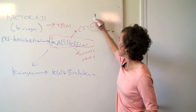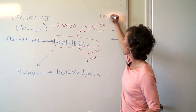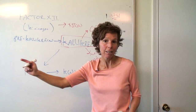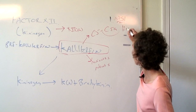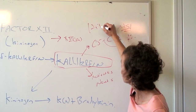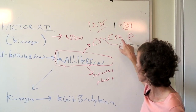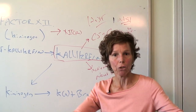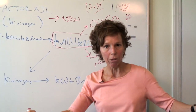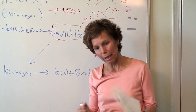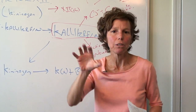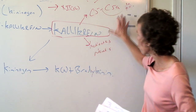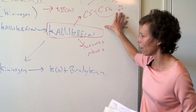Remember, this activates the mast cells to secrete histamine. Histamine is the byproduct of this C5a. Histamine is going to increase that postcapillary venule permeability, so now you can get more cells into the fight — into the tissue from the vessels. That's one thing that kallikrein does.